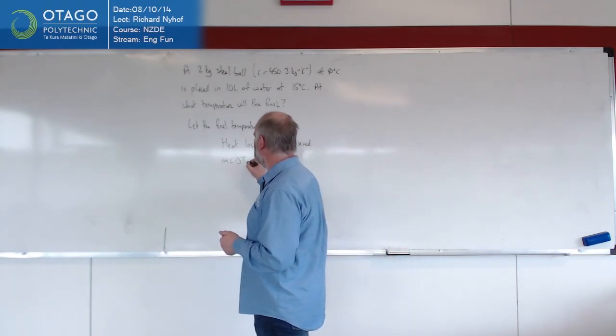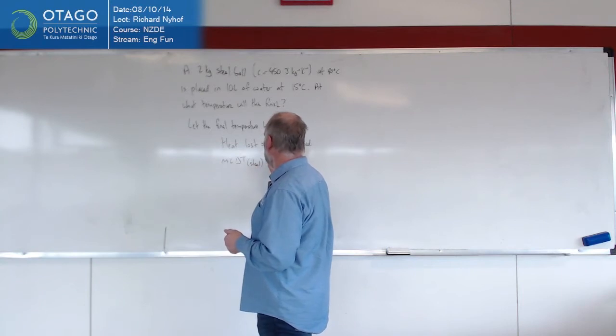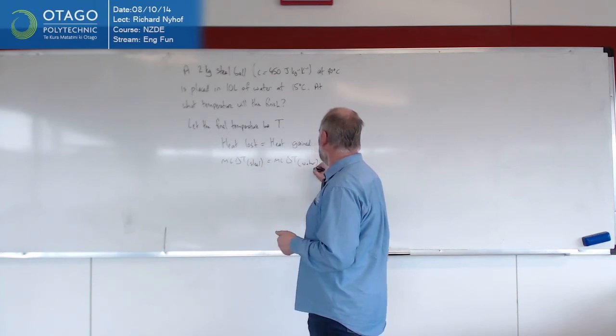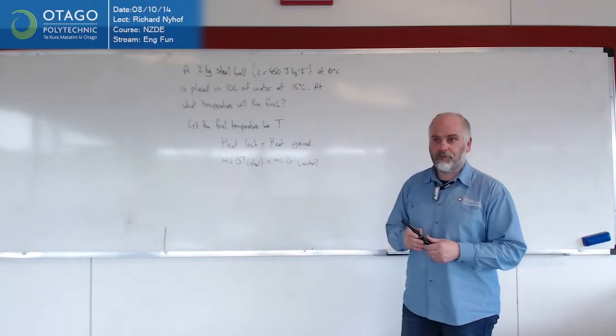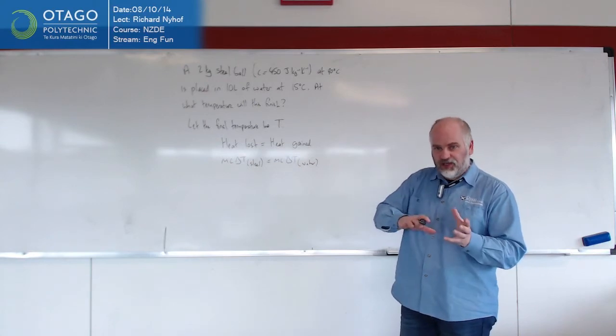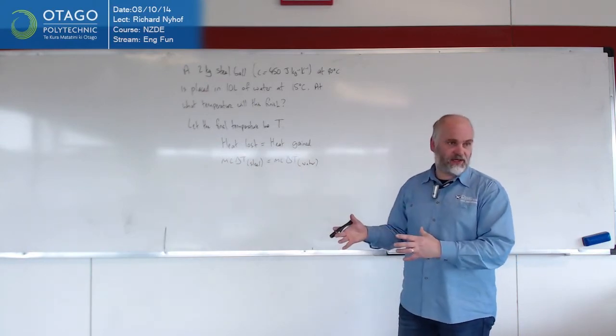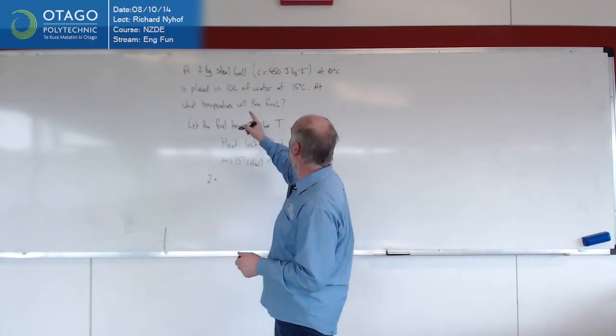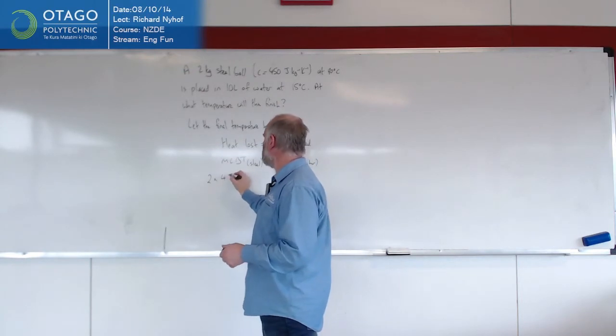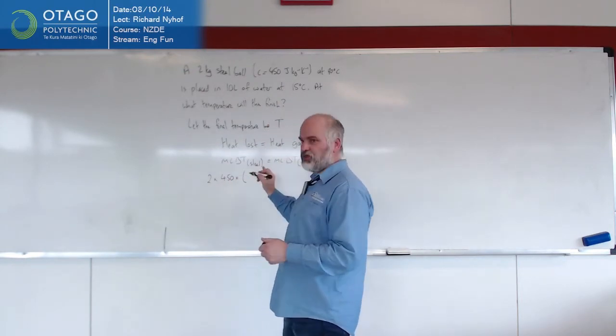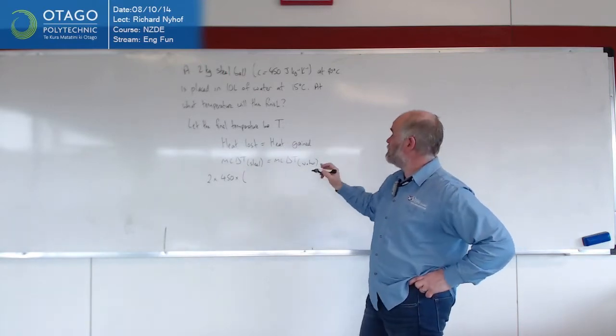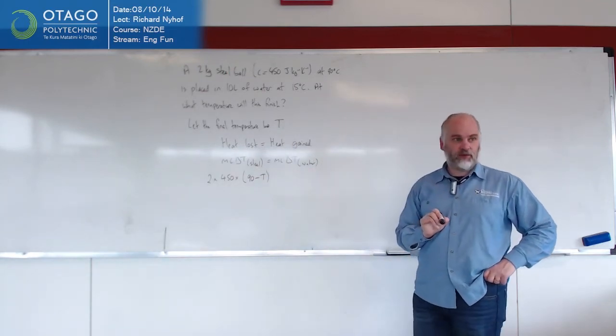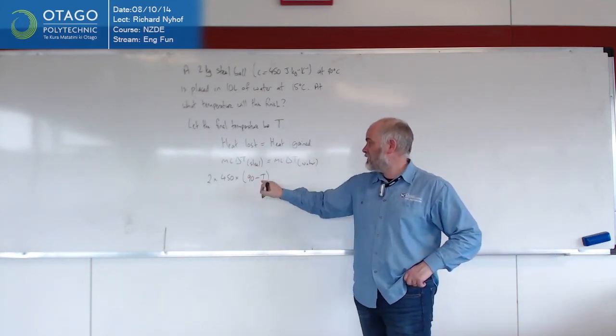So MC delta T for the steel has got to be equal to MC delta T for the water. So whatever the steel is losing is equal to whatever the heat is gaining. So what's the steel losing? Well, it's 2 kgs times 450 for steel, times the change in temperature for steel. Well, the steel started off at 90 and ended up at some temperature that we don't know. So the change in temperature is 90 minus T.